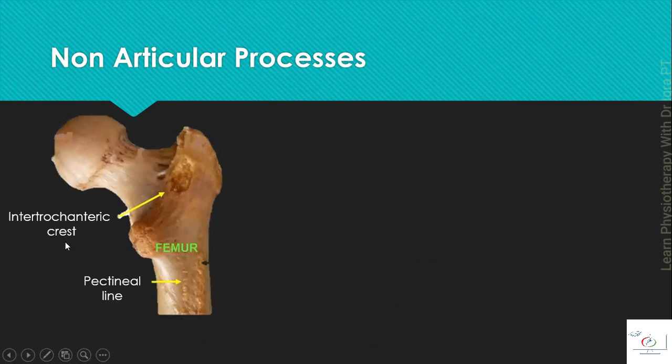Because it is present between two trochanters. And what are the trochanters? Trochanter is a rounded non-articular projection of the bone. For example, the greater trochanter and the lesser trochanter of the femur.